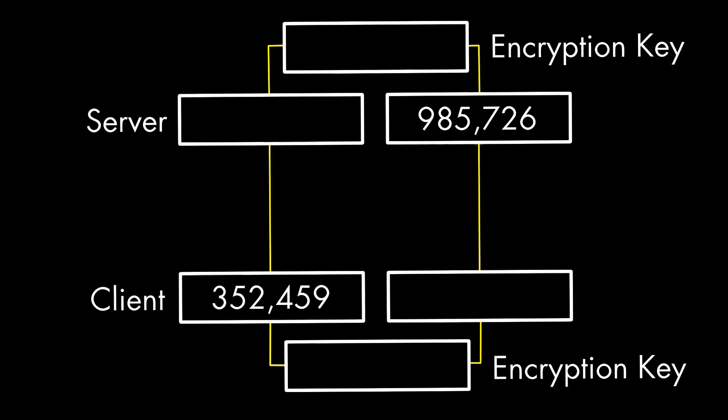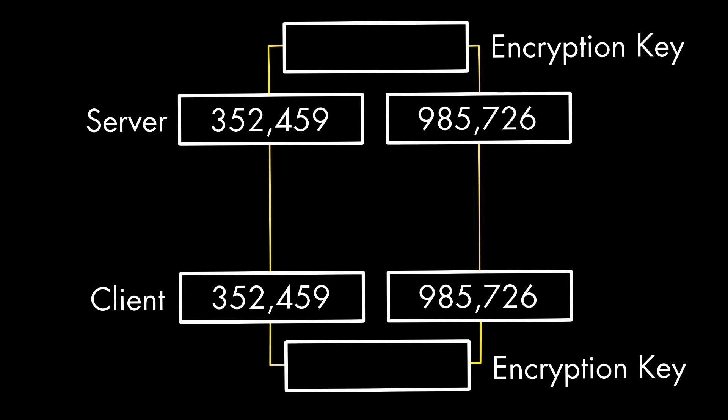Random numbers are also essential for computer security. Every time you establish a secure web connection, your computer and the computer you're talking with exchange a pair of random numbers used to create a temporary encryption key, a process which is explained in the third chapter of How Software Works. So all kinds of software use random numbers.